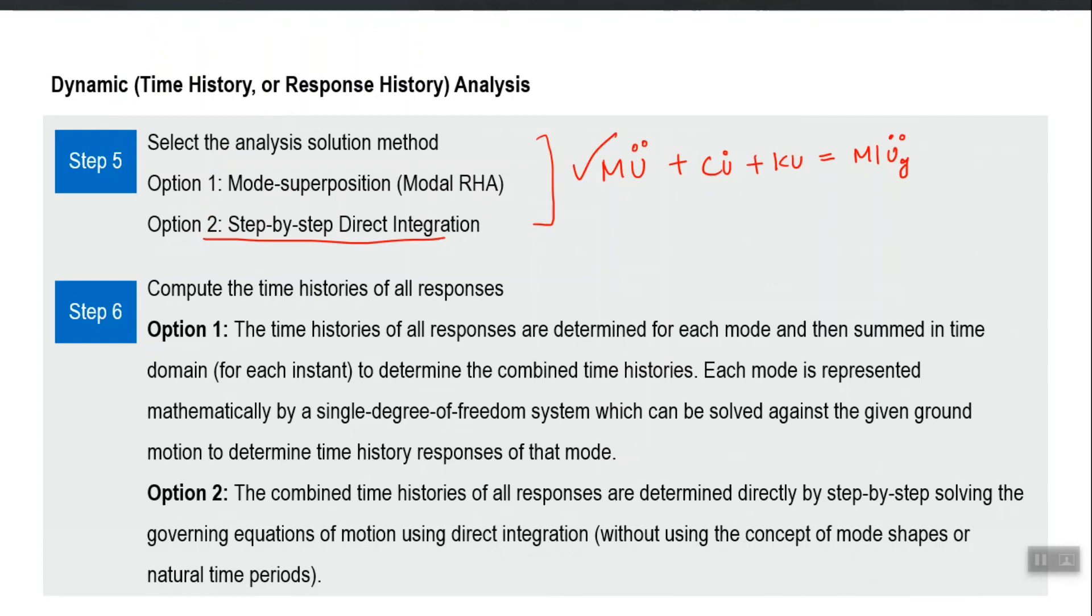incremental form is used or solved to get the response for next increment and that next increment used for the further next increment. You know that already Newmark method, there are several of Newmark method and then some other methods also.